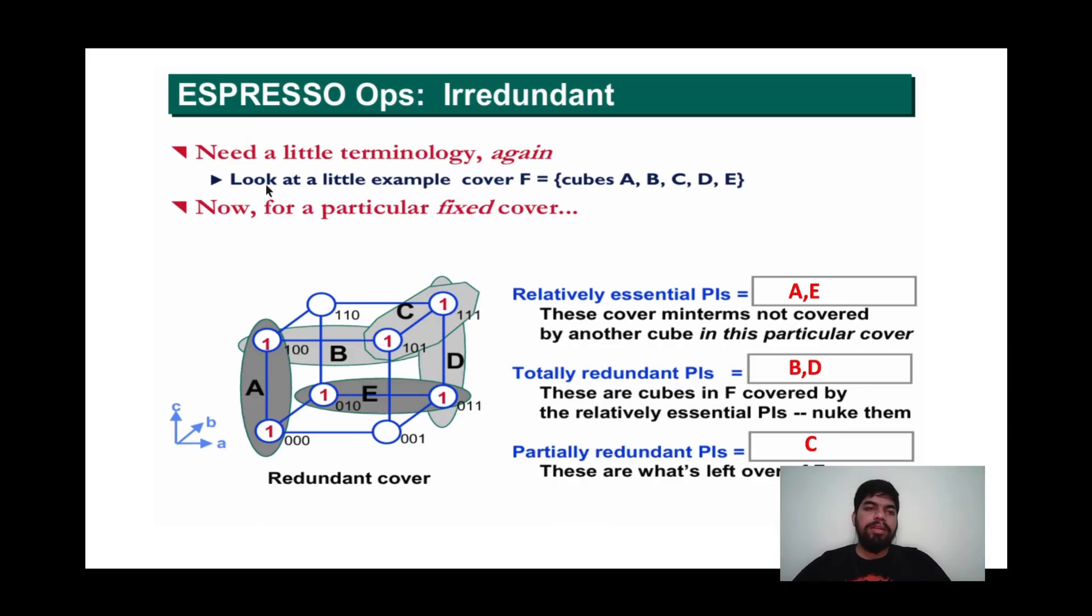In the next part, after reduction, we check for irredundant. Here in the given figure, we have cover F which includes cube A, B, C, D, and E. We can see that cube A and cube E are relatively essential, or we can see these two are relatively dark. Cube B and cube D are totally redundant. And cube C is partially redundant.